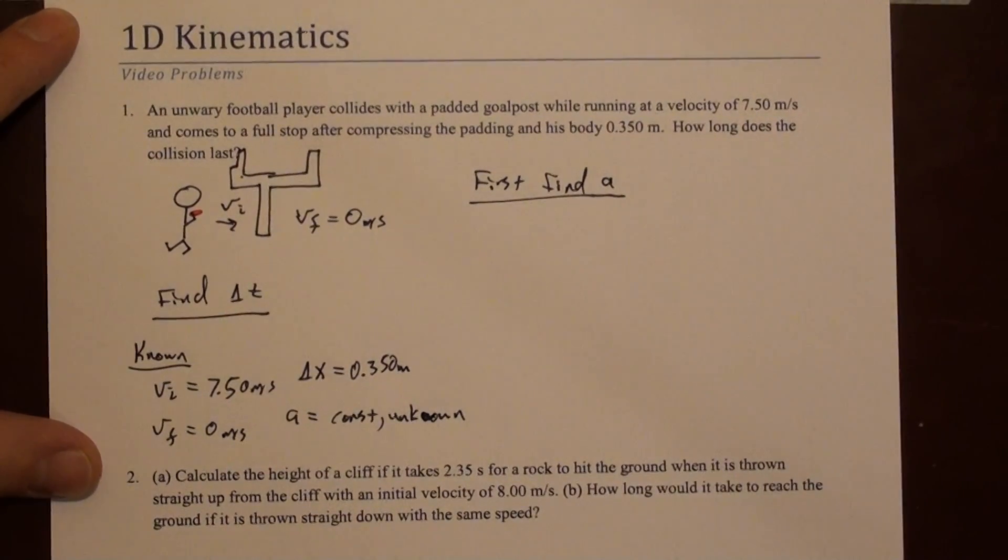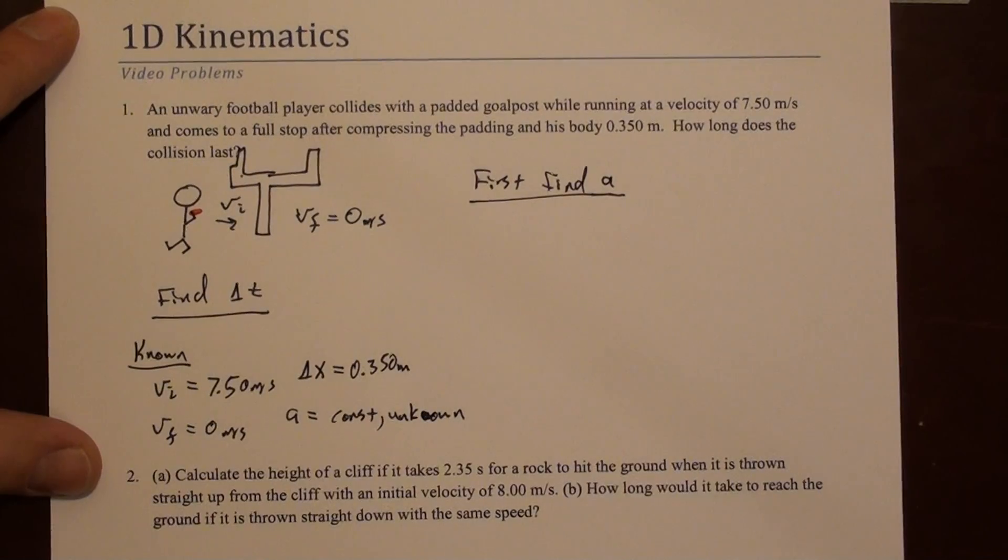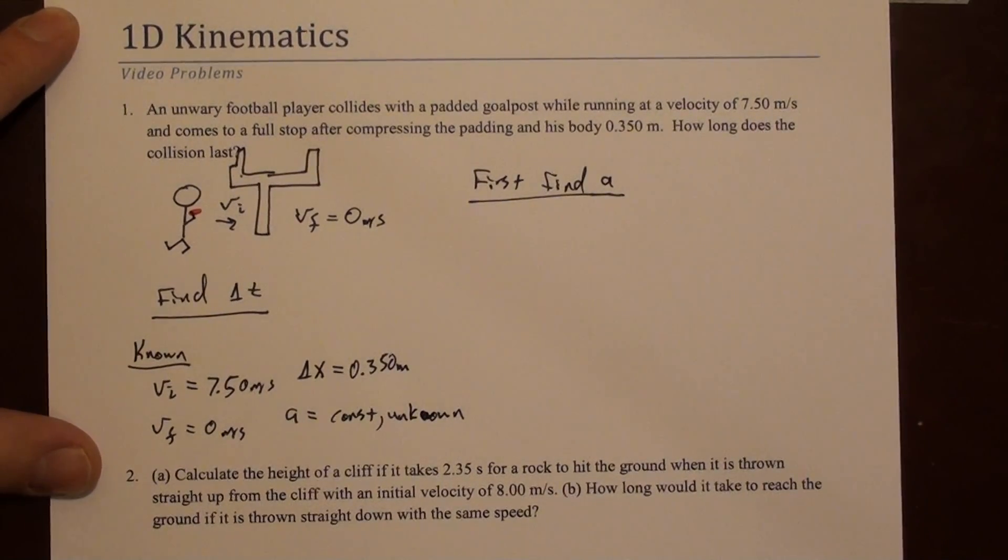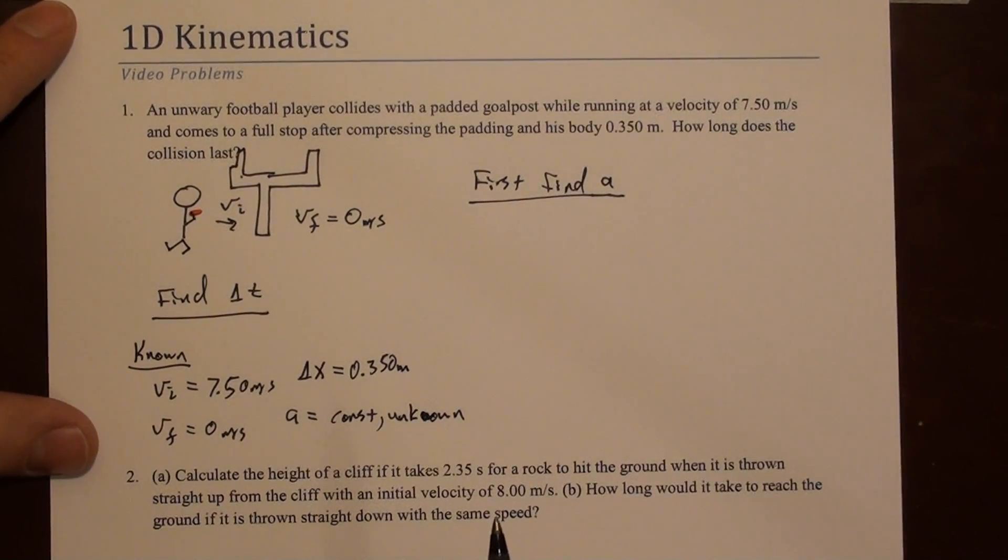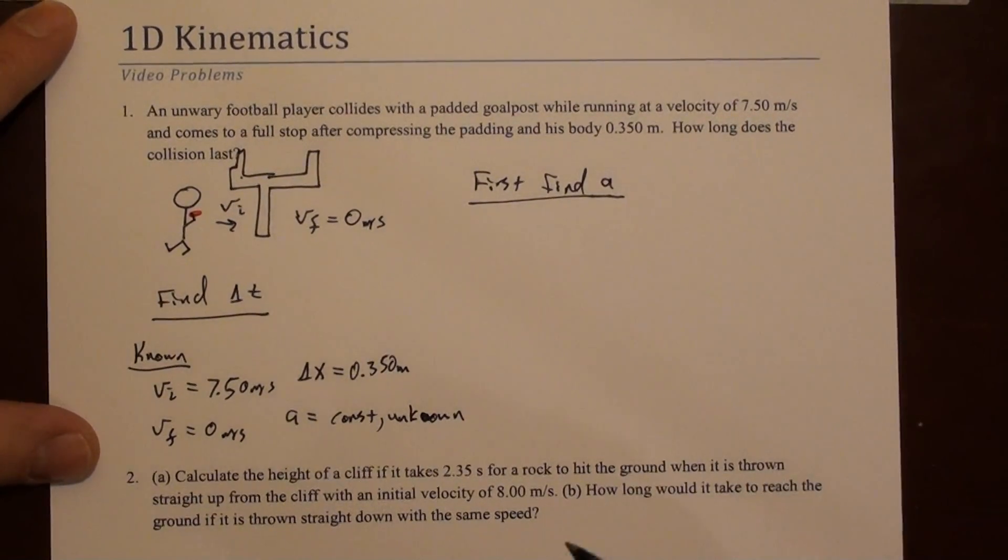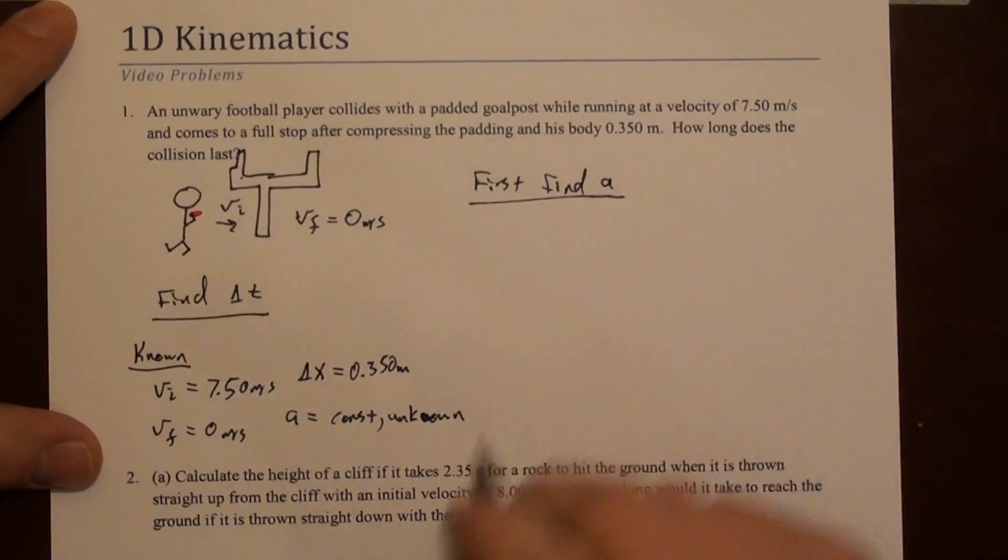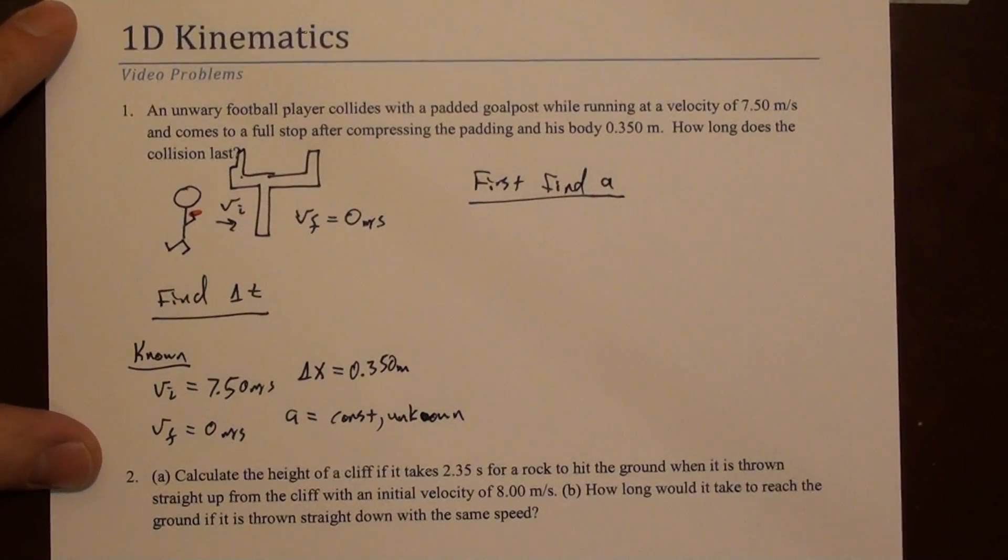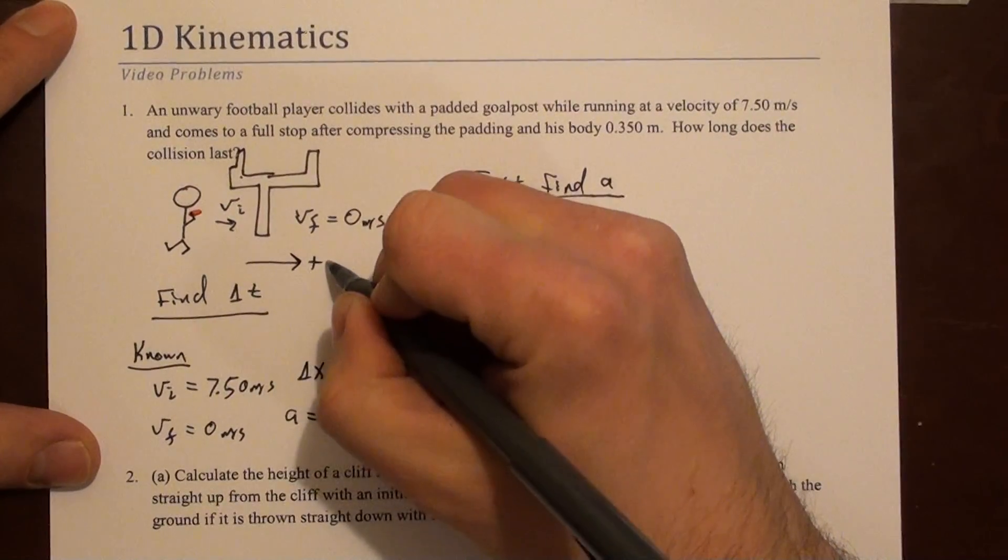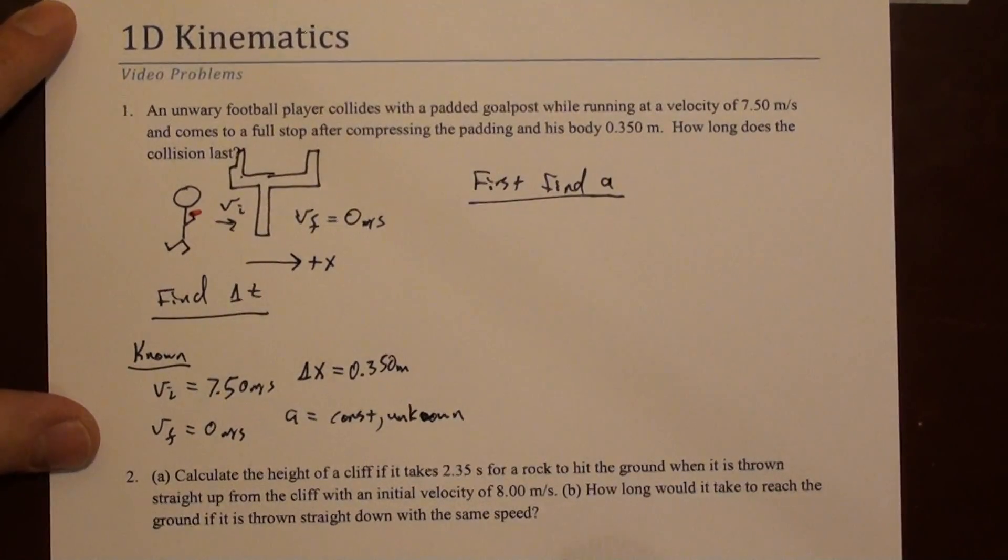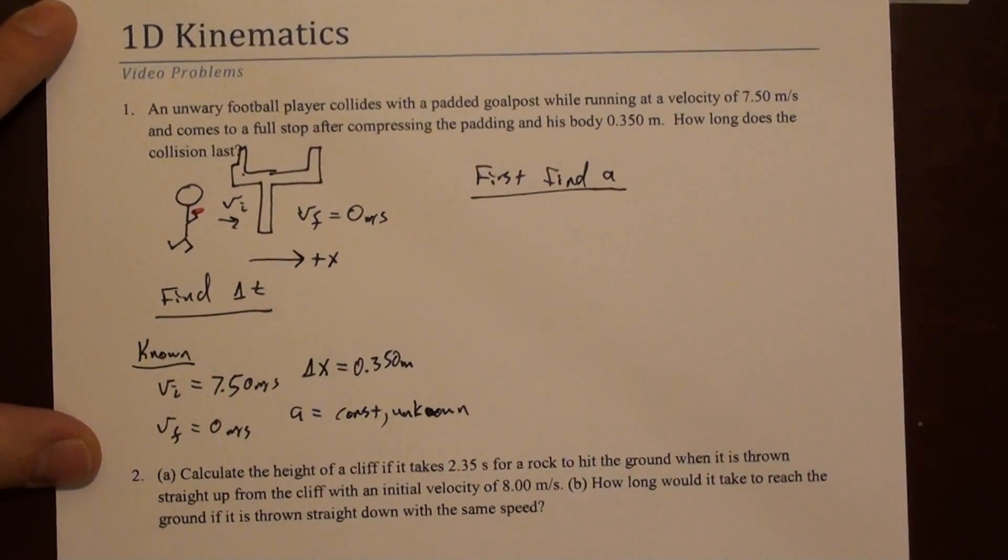Because all of our kinematic equations involve acceleration, we need to know that first. In fact, in this case it's a deceleration. Deceleration simply means that the acceleration vector and the velocity vectors point in opposite directions, so that the acceleration acts to slow the object down. And this is important because it looks like we should be looking for a negative acceleration. If we call to the right positive x, the acceleration should be to the left. And we'll see that.